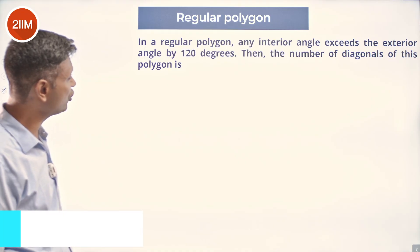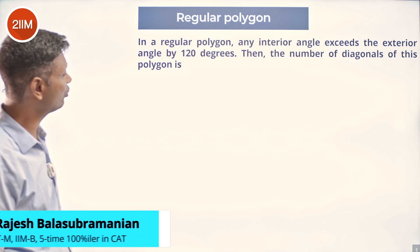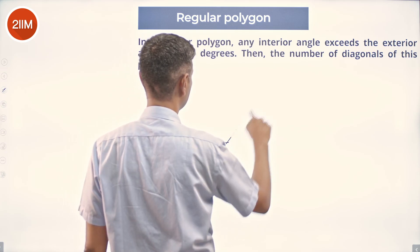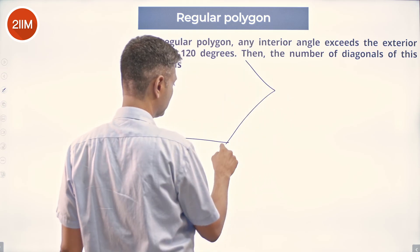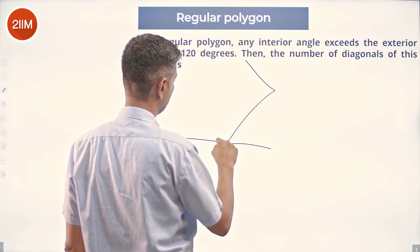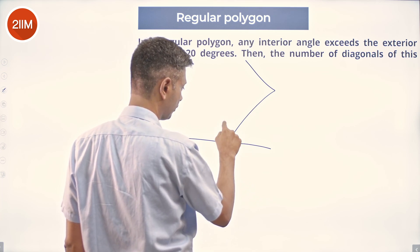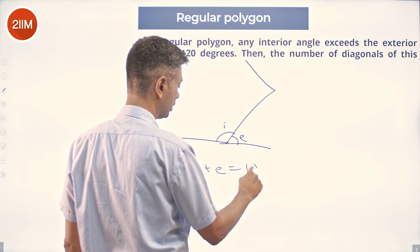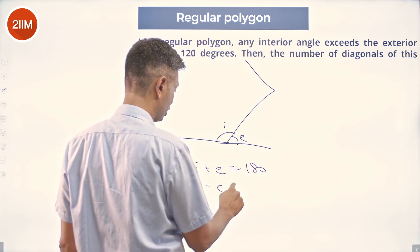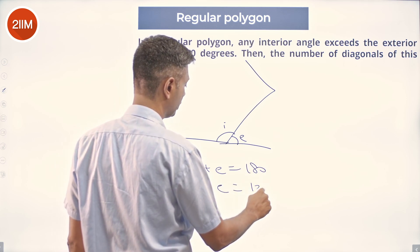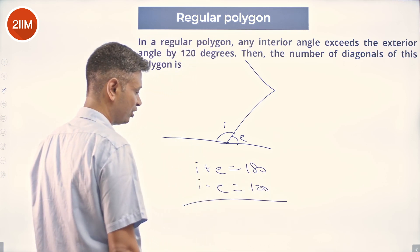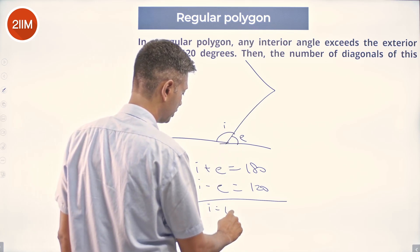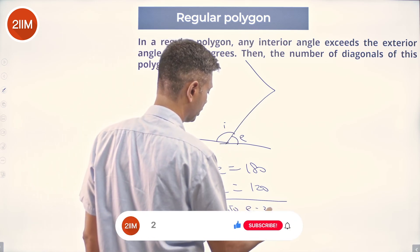A regular polygon — any interior angle exceeds the exterior angle by 120 degrees. So, for a polygon like this, with interior and exterior angles: I plus E is 180, I minus E is 120. Adding these two: two I is 300, so the interior angle is 150 degrees and the exterior angle is 30 degrees.